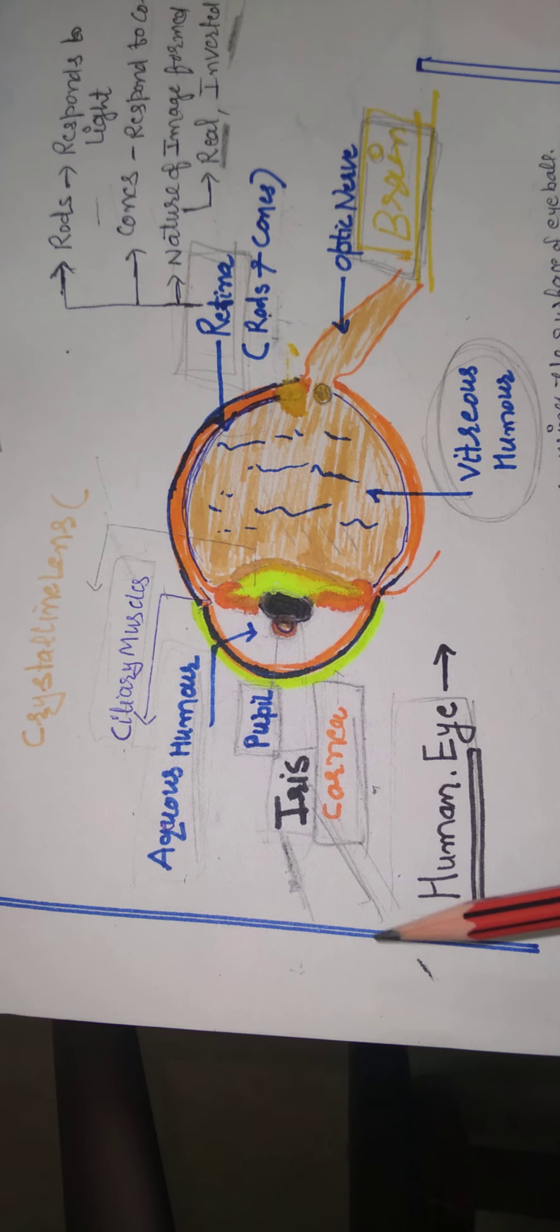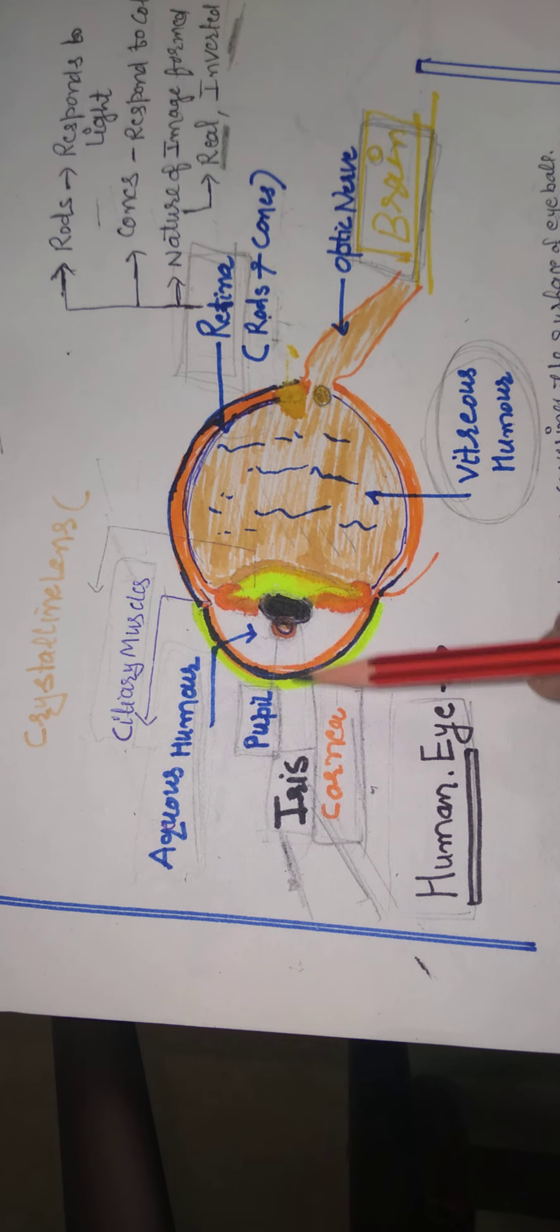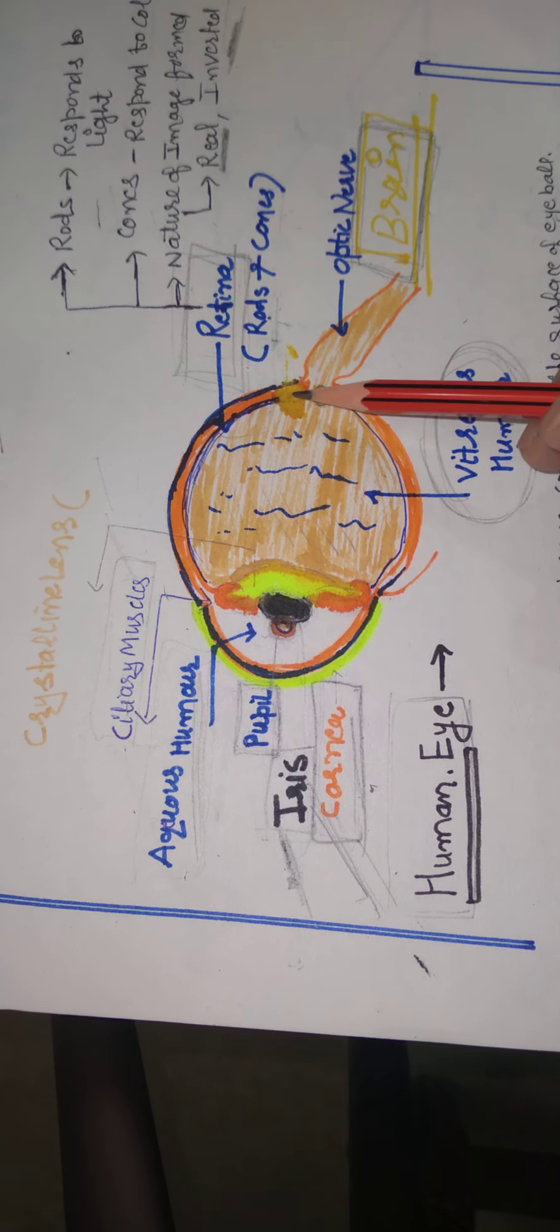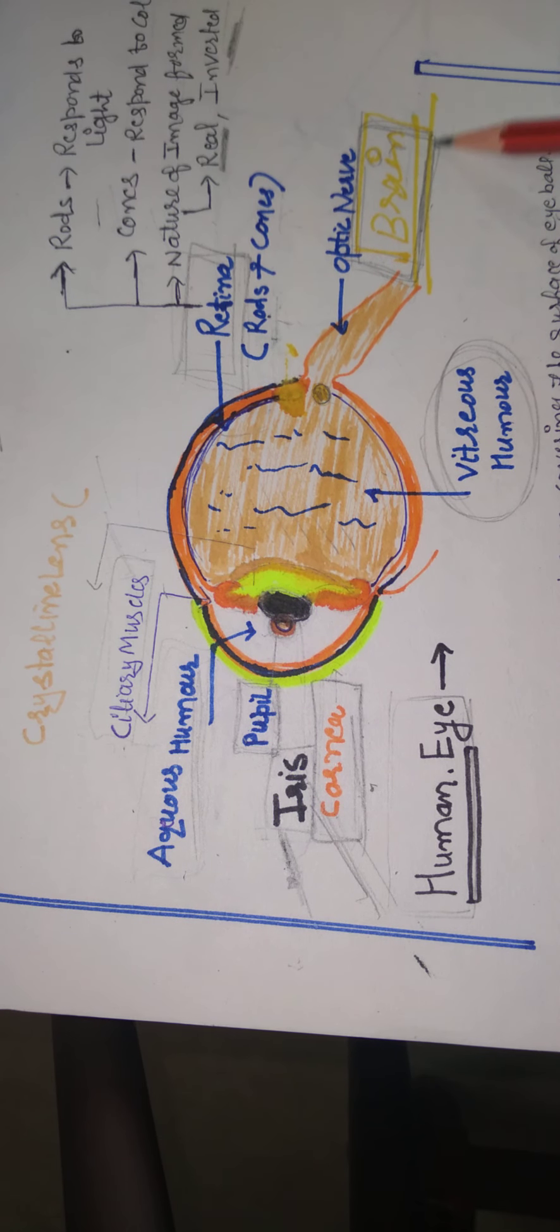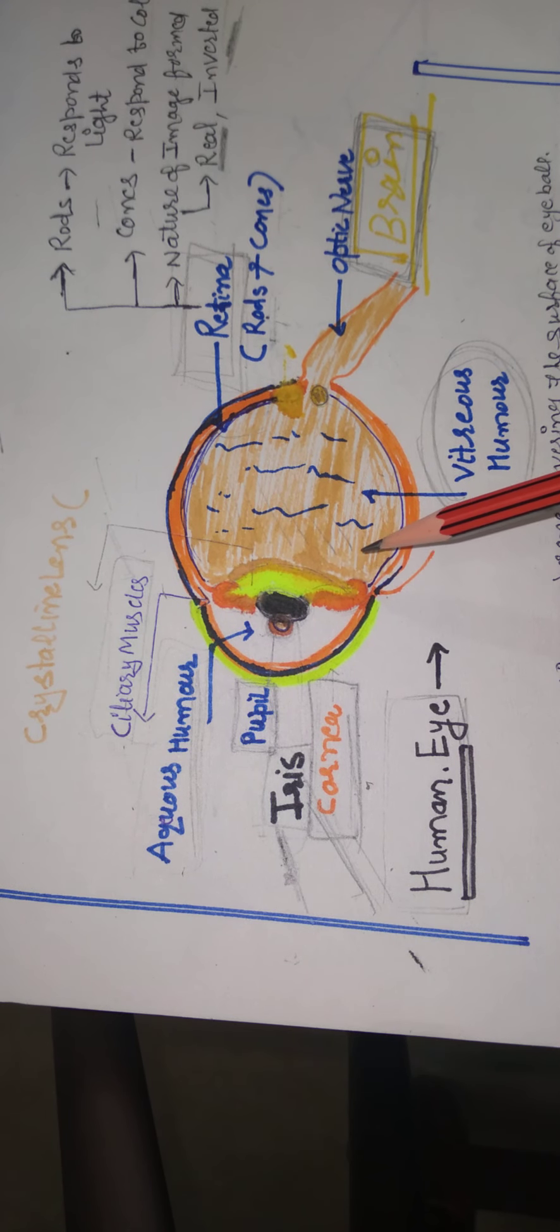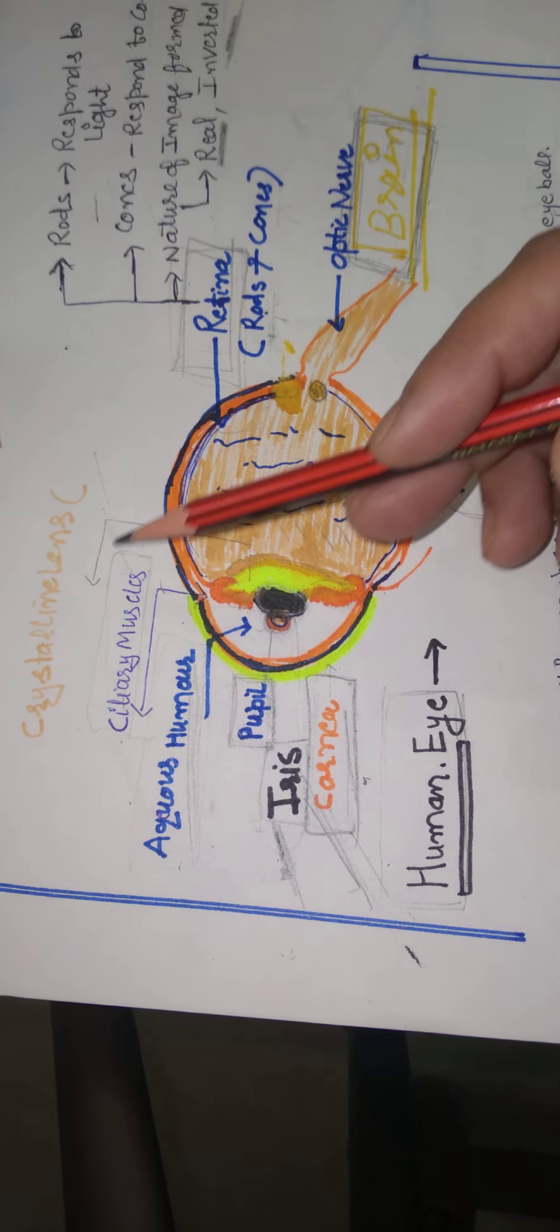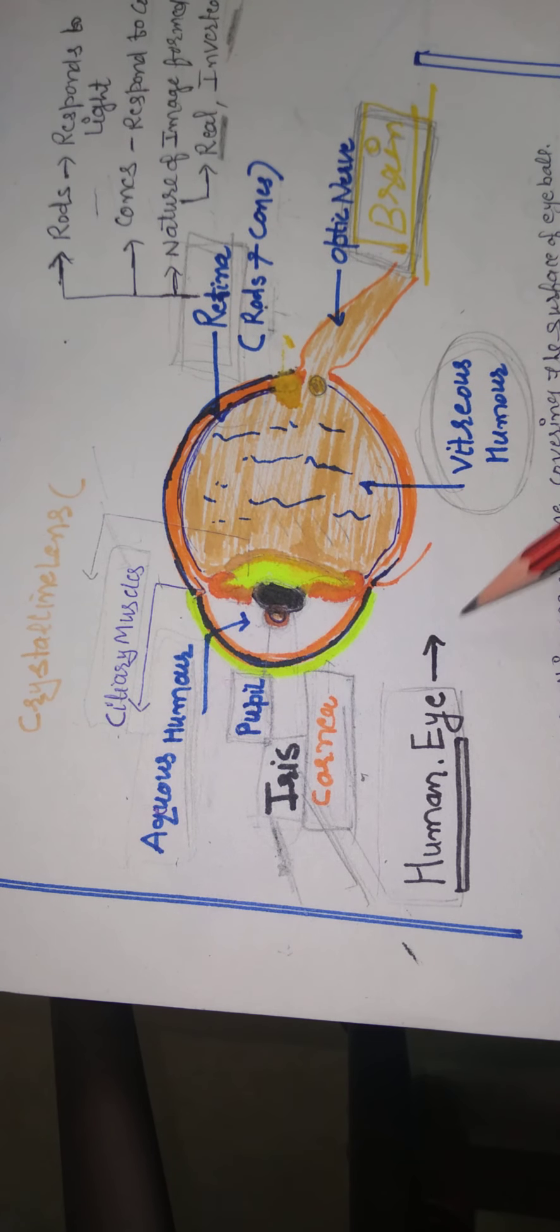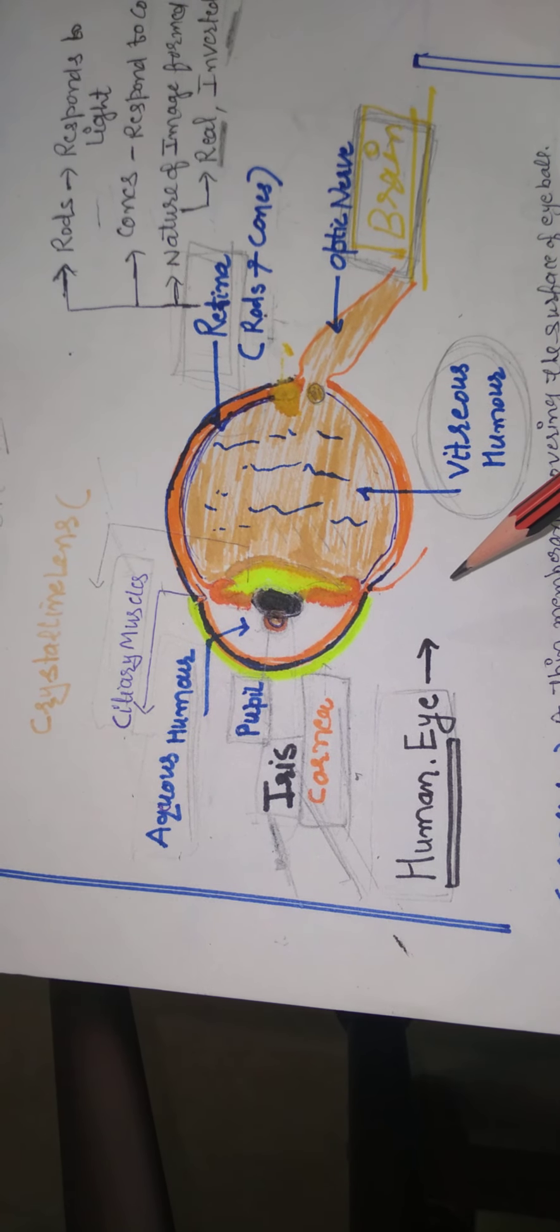Through the optic nerve. Light just enters from this part to the eye. Only our brain sees the object through the eye. So these are the various parts of the eye.